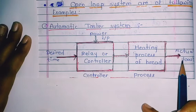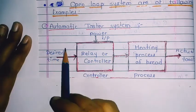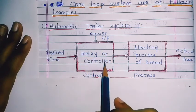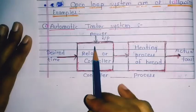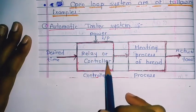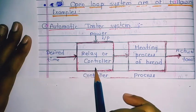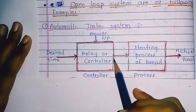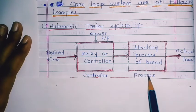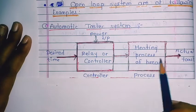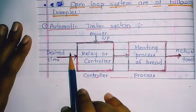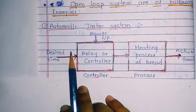The working principle: the desired time will be sent to the relay or the controller. The relay or controller has one additional input from power input. This relay or controller output goes to the heating process of the bread, which heats the bread and produces the actual toast. This is an example of an open loop system.